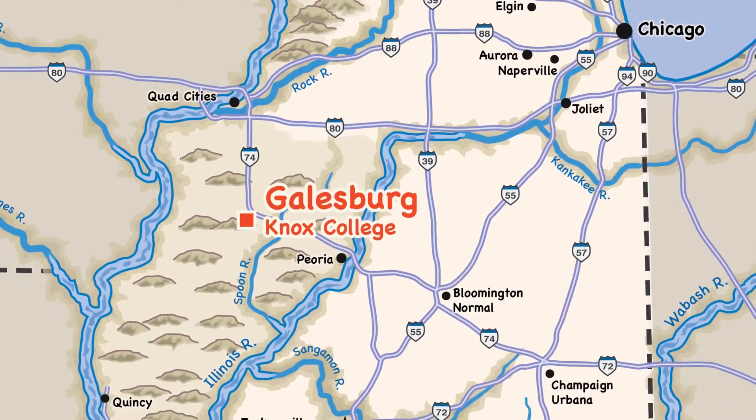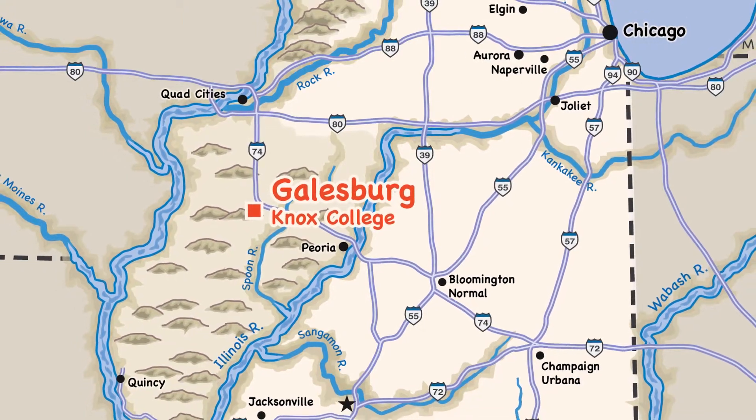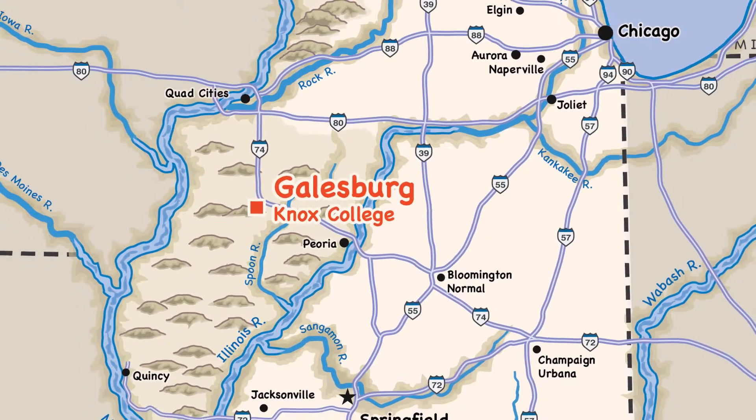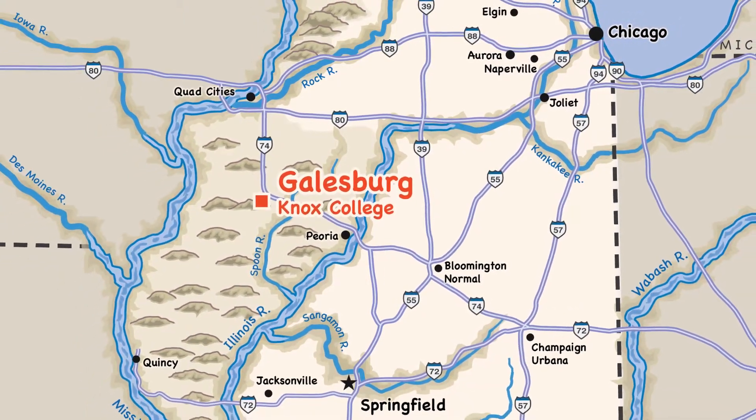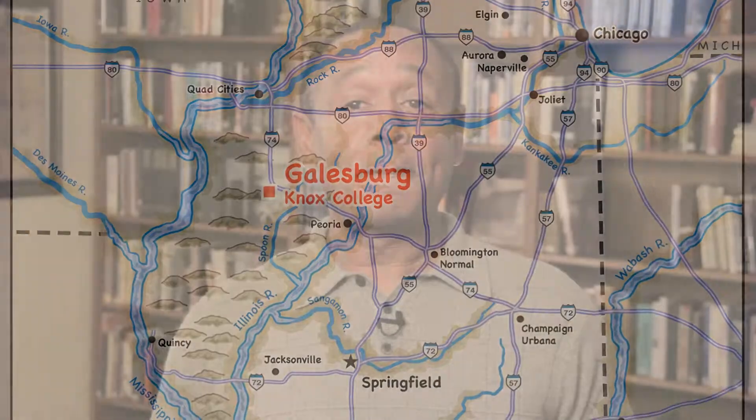Founded in 1837, Galesburg and Knox College were significant hubs of abolitionist and Underground Railroad activity in West Central Illinois. The Knox College founding document, called the Circular Plan, opposed slavery and declared that the college would be accessible to students regardless of their financial means and regardless of their race.